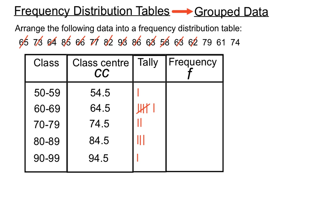62 gives us another tally in the 60s. 79, another one in the 70s. 61 goes there. 74 goes there. Okay, so we've tallied up how many scores occur or belong to each of those classes appropriately.